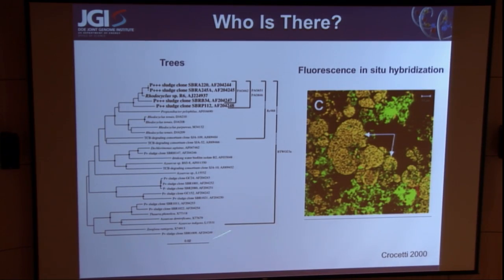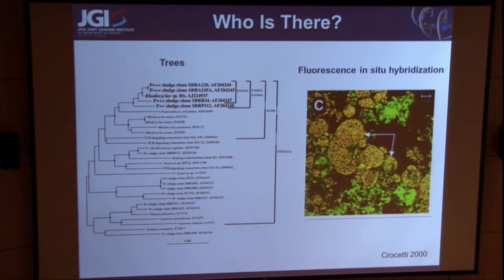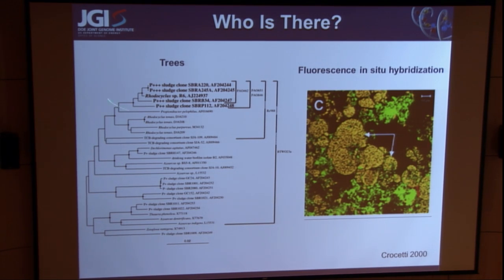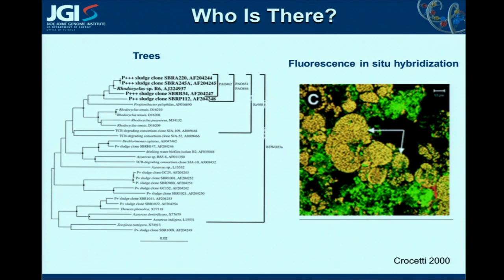This is showing that kind of data from an enhanced biological phosphate removal bioreactor. You can see there are new organisms here related to rotocyclists. You can visualize them with fluorescence in situ hybridization and get some idea of where they are in the sample. But this kind of low-throughput method of cloning and sequencing individual genes doesn't work that well when you want to compare samples that are really complex — you can't easily compare a tree from one sample to another.